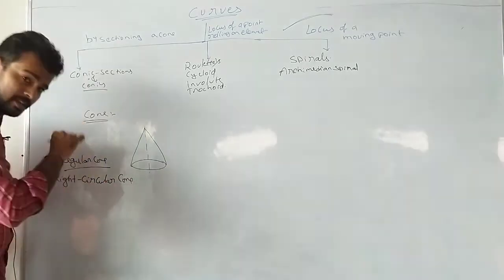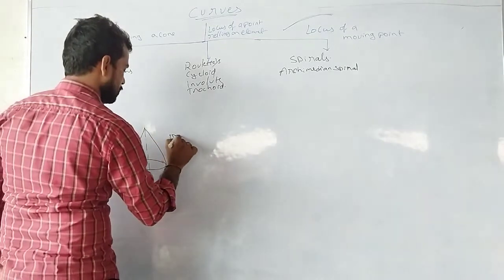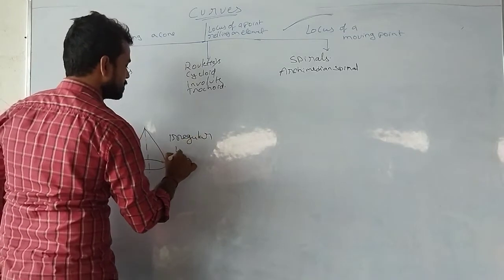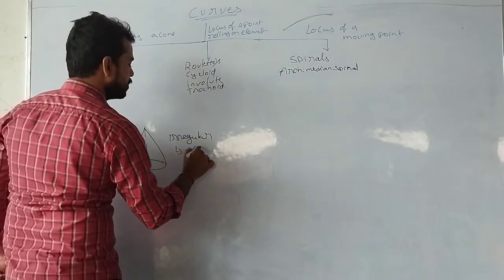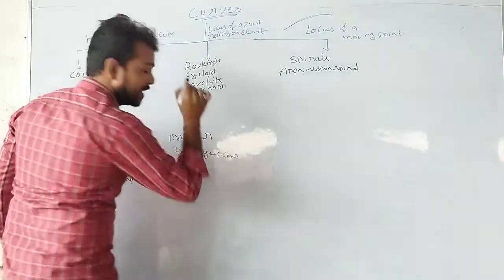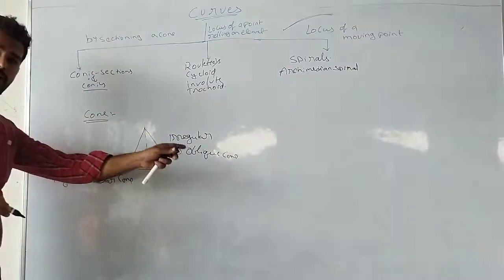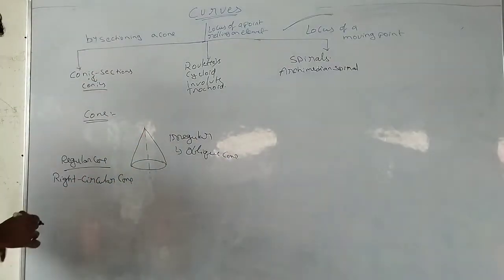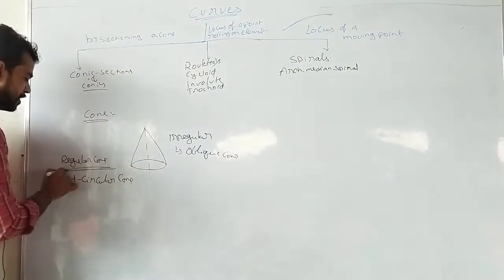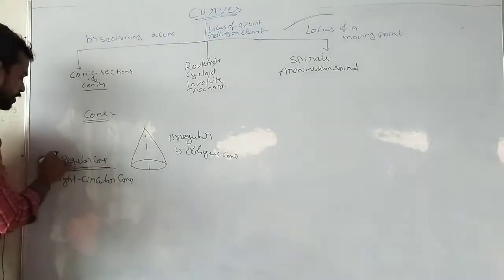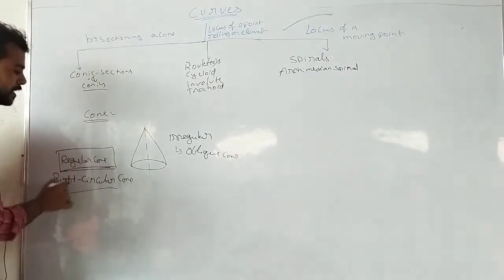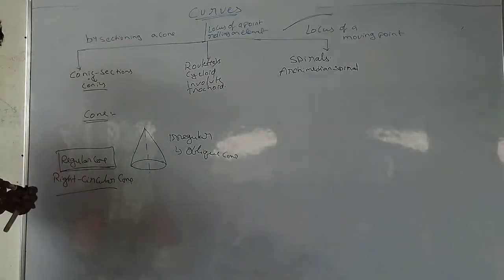If it is irregular, then it is called an oblique cone. As we are going to deal with only regular things, we need to consider the regular cone, which is the right circular cone.